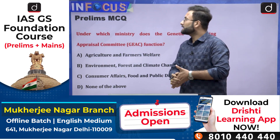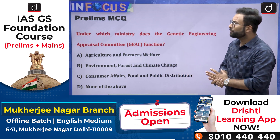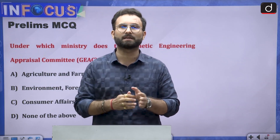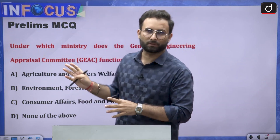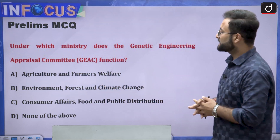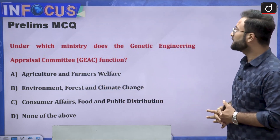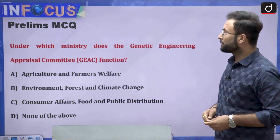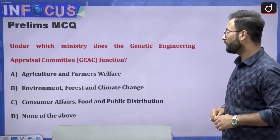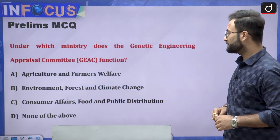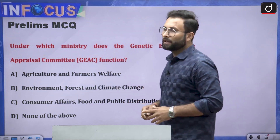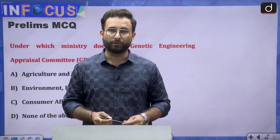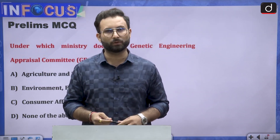We have discussed all aspects related to this news item on the split verdict in the genetically modified mustard case. Here is an MCQ for you to answer in the comment box: Under which ministry does the Genetic Engineering Appraisal Committee function? Options: (A) Agriculture and Farmers Welfare, (B) Environment, Forest and Climate Change, (C) Consumer Affairs and Food and Public Distribution, (D) None of the above. Please subscribe to the channel and have a good day, thank you.